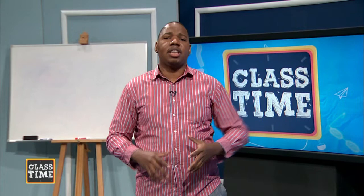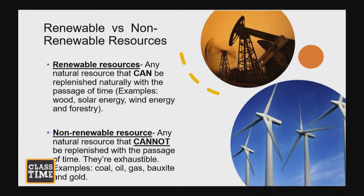Natural resources can be classified into two broad groups: renewable resources and non-renewable resources. When we think about a renewable resource, we're thinking about any resource that can be replenished with the passage of time. Some examples include our forestry reserves like wood, solar energy, and wind energy — all of these constitute renewable resources because they can be renewed quite easily with the passage of time.